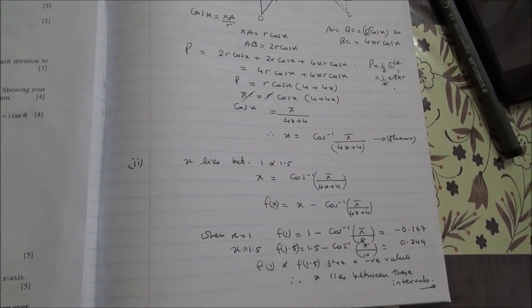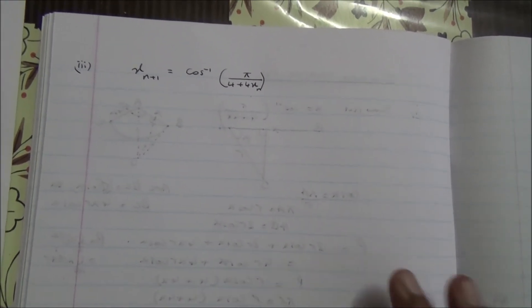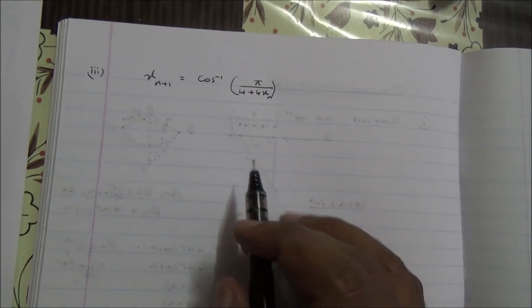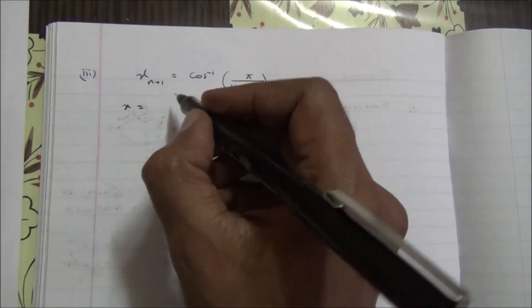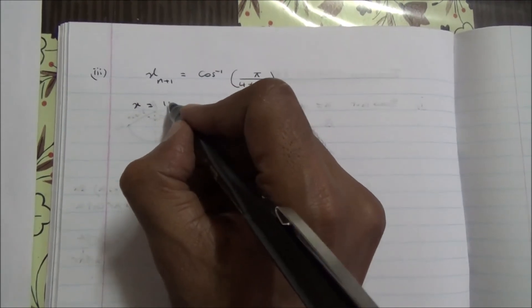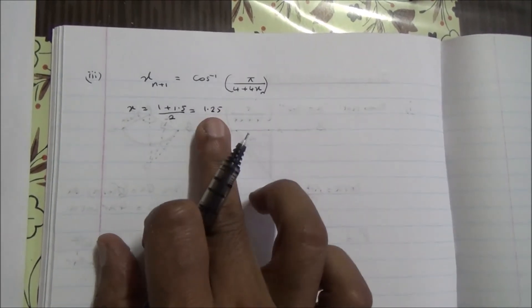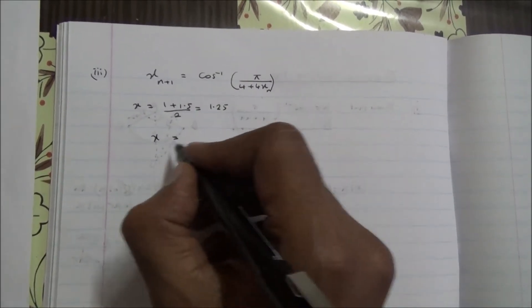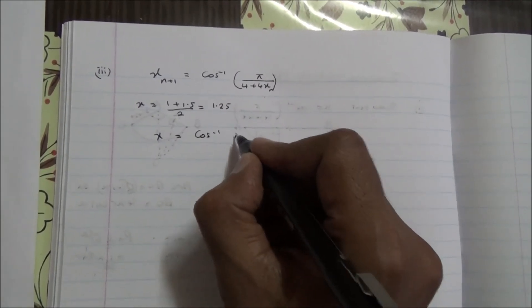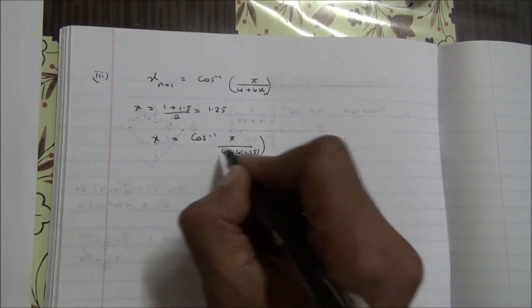Welcome back to the third part. We need to use the iterative formula to give the value of X correct to two decimal places and give the result of each iteration to four decimal places. Now we have to use an initial value of X. X is going to be, we were told at the beginning that it's between 1 and 1.5. So you take 1 plus 1.5 and divide by 2, you're going to end up with 1.25. So that's the initial value of X. Therefore, X, the first value of X, is going to be inverse cos of π upon 4 plus 4 times 1.25.